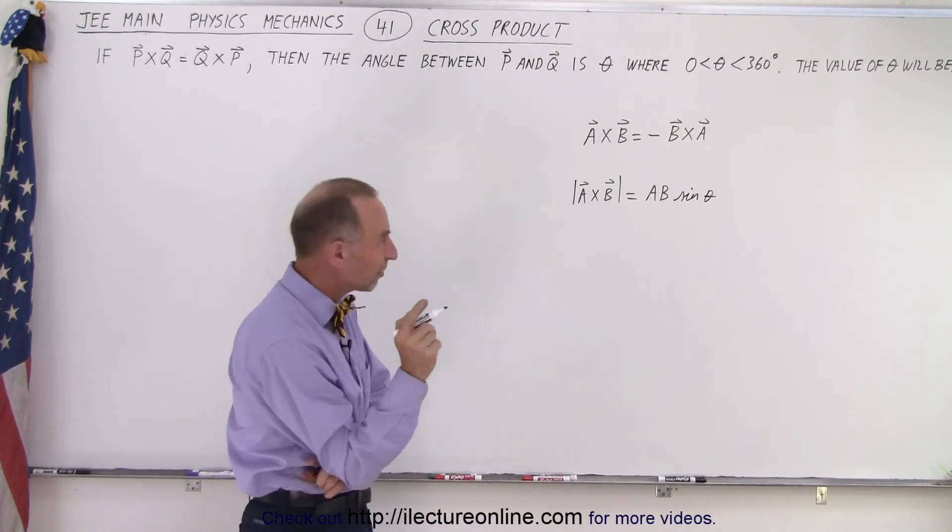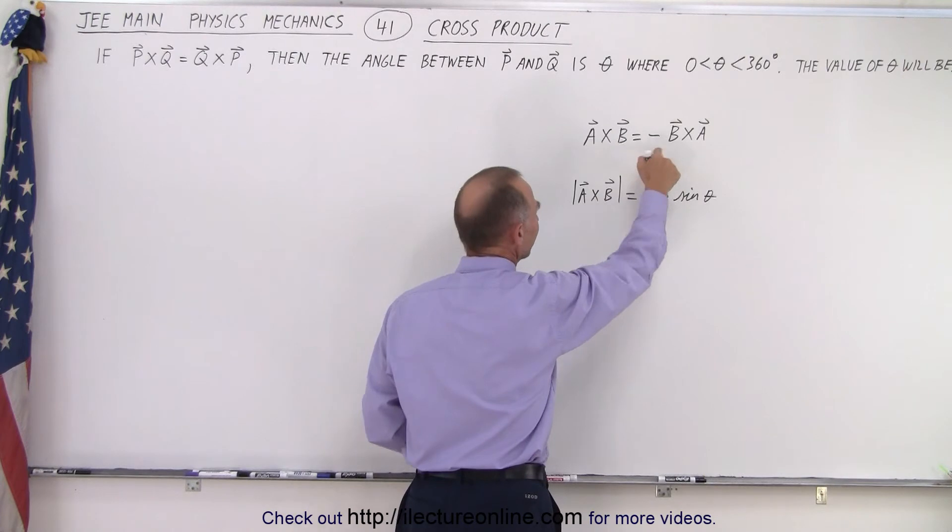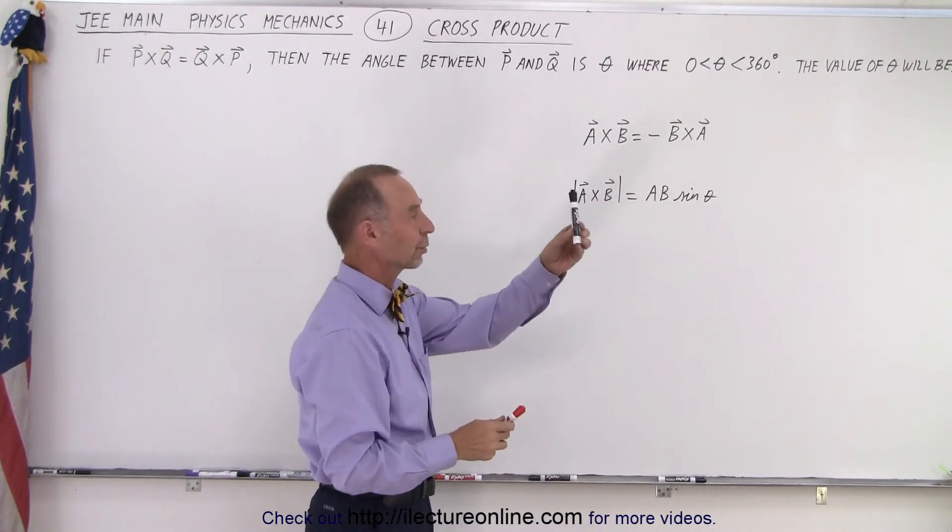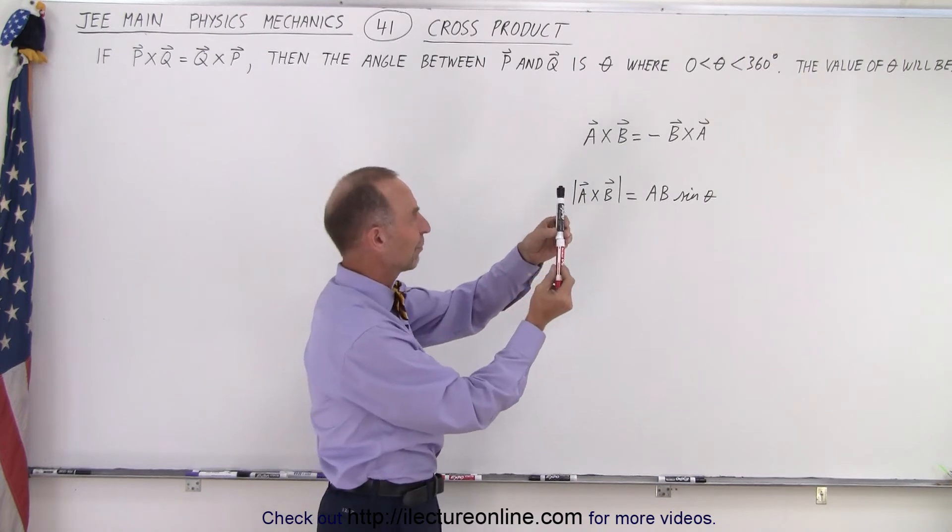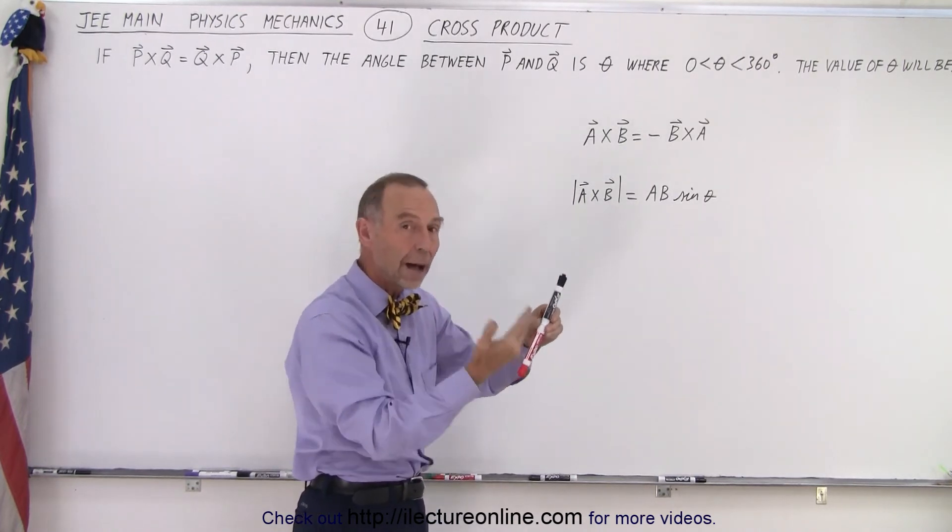But if we express it in terms of the vector product, we know that the one is the negative of the other because simply, in one case, the vector product will point in one direction, and if we reverse the two vectors, it will point in the opposite direction. Same magnitude, just opposite direction.